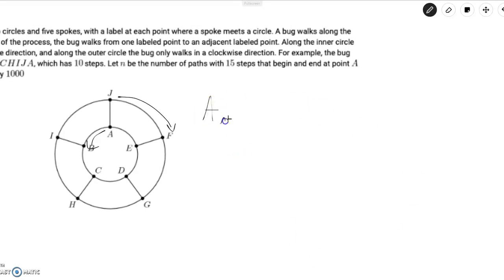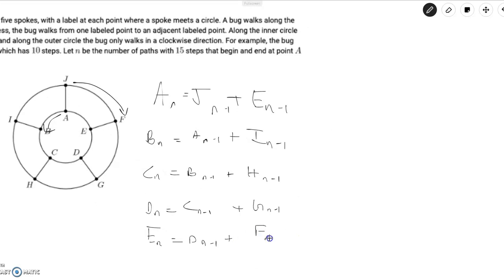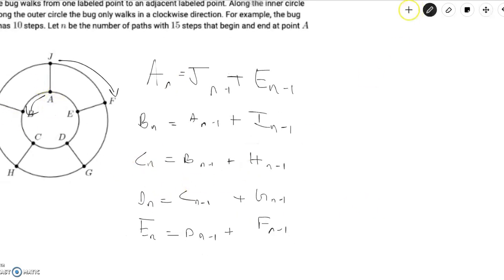And so, we have A of n is simply equal to J of n-1 plus E of n-1. Then we have B of n is equal to A of n-1 plus I of n-1. C of n is equal to B of n-1 plus H of n-1. And D of n is equal to C of n-1 plus G of n-1. And E is equal to D of n-1 plus F of n-1. And since we've done it for the inner, but these all relate to the outer, we can also do these recursions on outer parts.